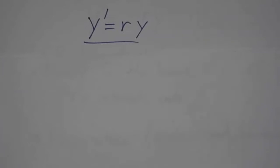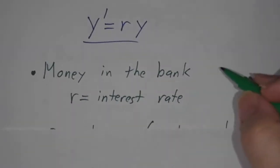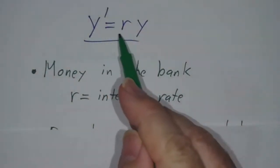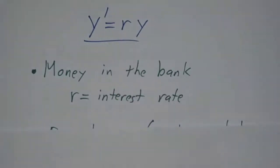So first, y' = ry. The simplest example is you put some money in the bank. The bank gives you interest. You put twice as much money, they give you twice as much interest. So the rate at which the money is increasing is the interest rate times your current balance. Here, y is your bank balance, and r is the interest rate.